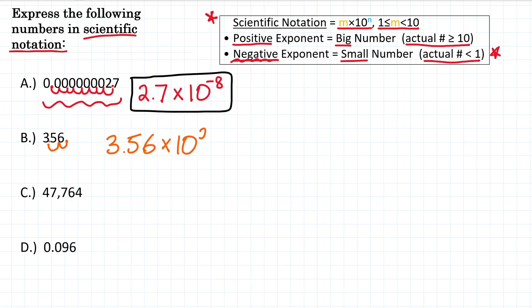Well, we moved the decimal 2 places. So the value is 2. And our number here is 356. That's a big number, bigger than 10. So we have a positive exponent. So for B, 356 is the same as 3.56 times 10 to the second.